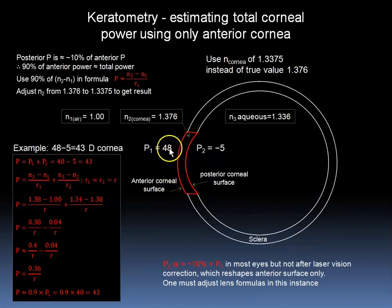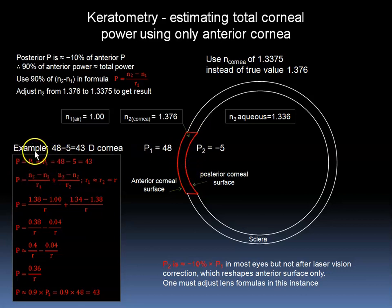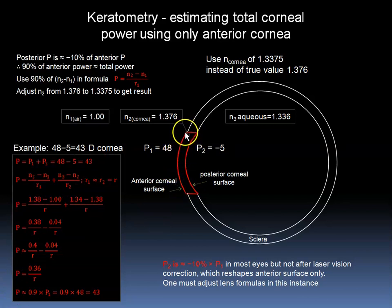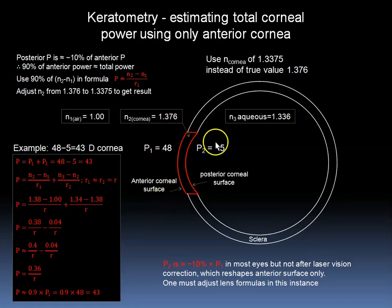Here we show an example where the front surface of the cornea is 48 diopters and the back surface is minus 5. The total power is 48 minus 5, which is 43. So if we are generally measuring only the front surface of the cornea, we can get the power of that surface and generally subtract 10 percent of that number, and we will be more or less correct for the total power of the cornea. In this way, we can ignore the posterior surface most of the time.